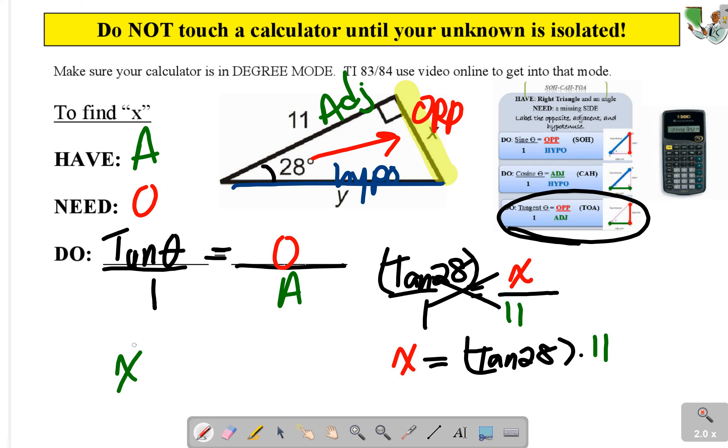So x is approximately 5.85. Check for units. We don't have units. You just write the word units.